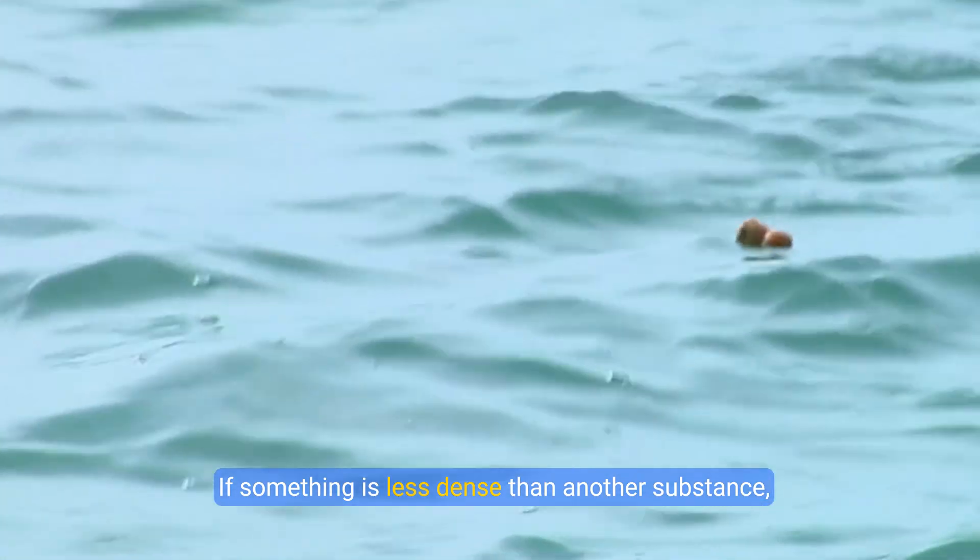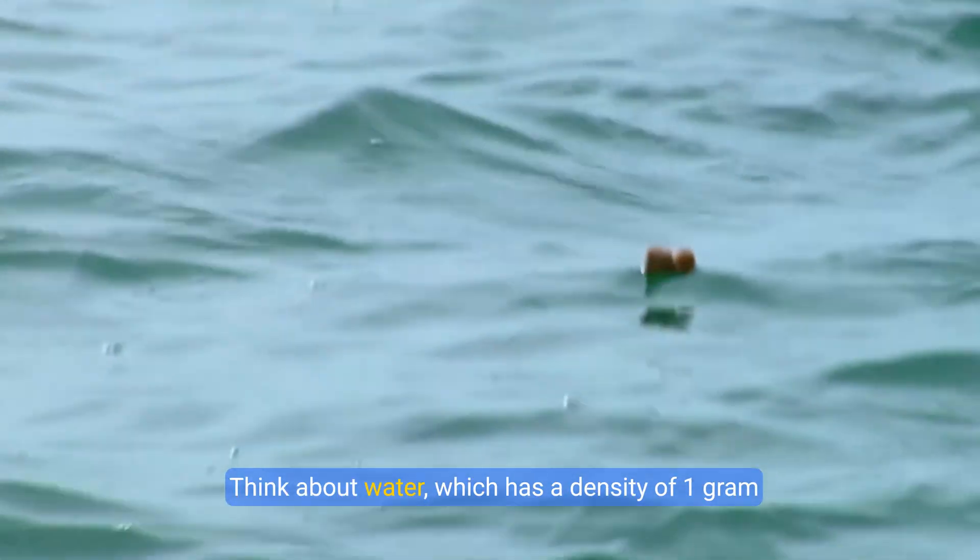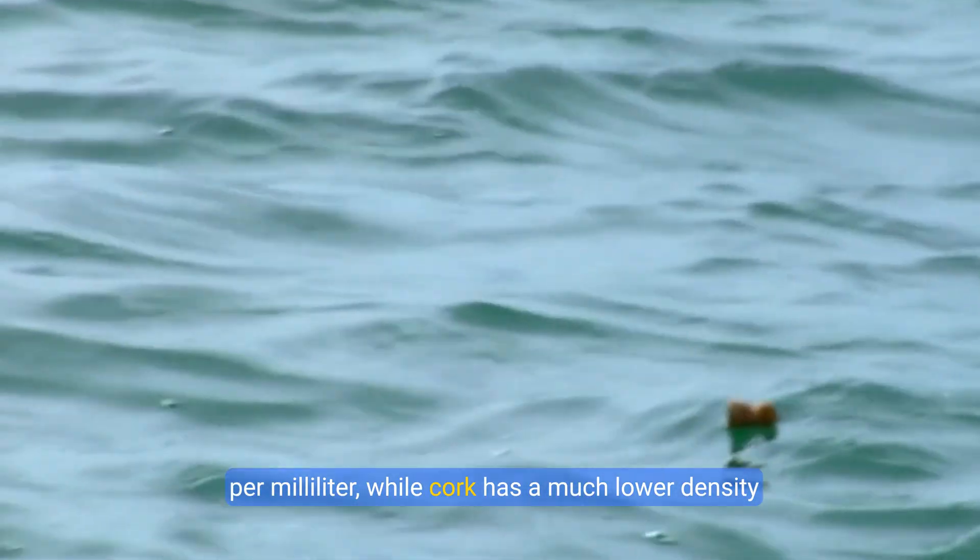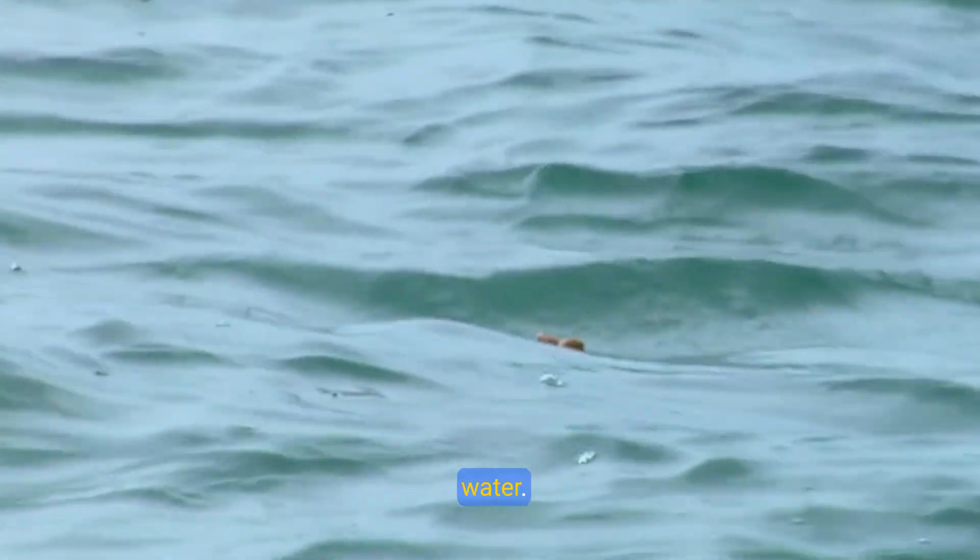If something is less dense than another substance, it will float on top of the denser substance. Think about water, which has a density of one gram per milliliter, while cork has lower density of 0.24 grams per milliliter, making it float on water.